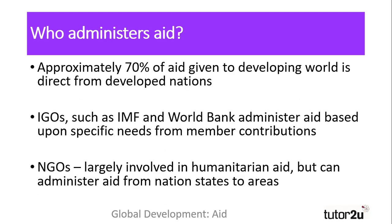So who administers aid? Approximately 70% of aid received by the developing world is given directly by nations in the developed world through bilateral aid. Other forms of aid such as multilateral aid are administered by international governmental organisations, or IGOs — for example the IMF and the World Bank.